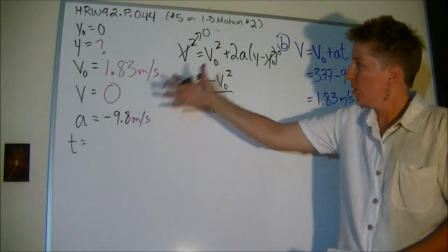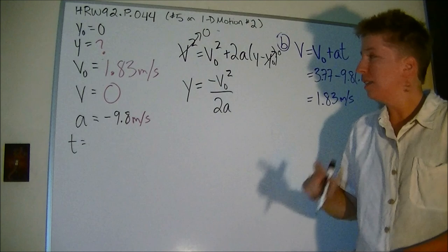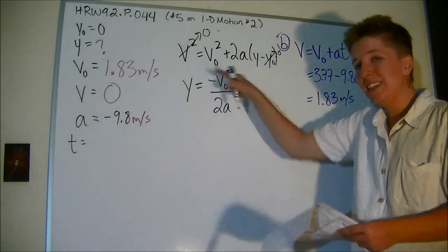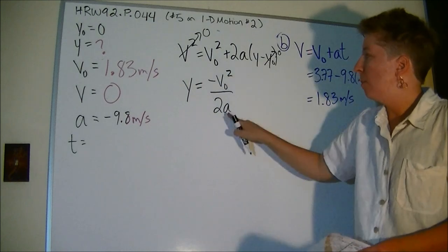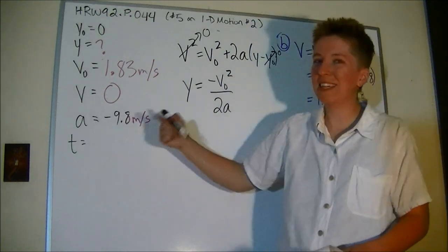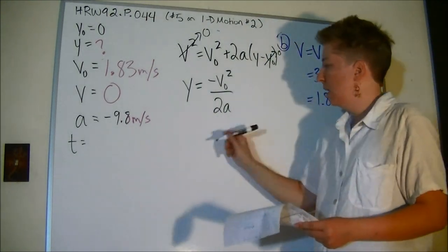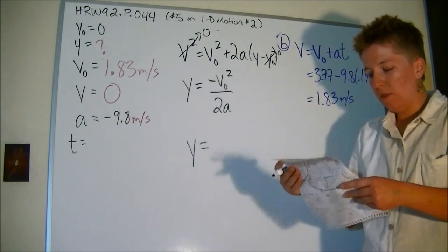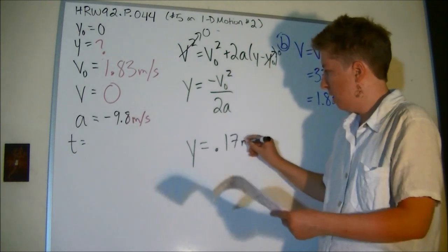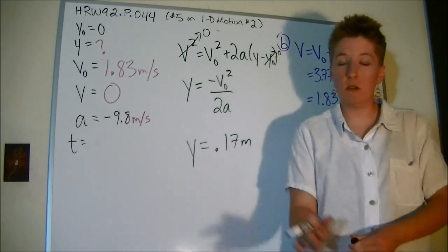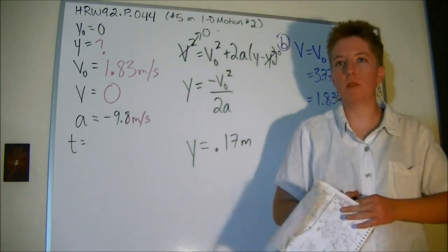If I plug in these numbers, keeping in mind that that negative is outside the square, so I'm going to get a negative thing on top, but a is also negative, so things are going to cancel. In the end I will get that it goes up another 0.17 meters, which was the answer on my WebAssign with my numbers.